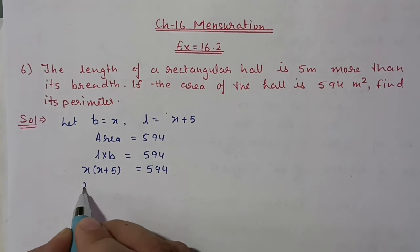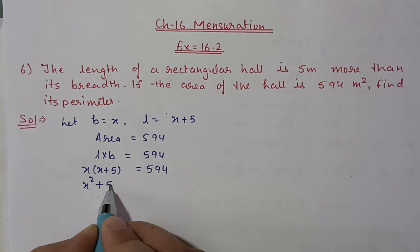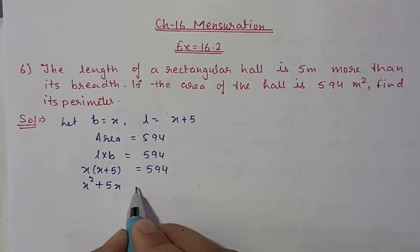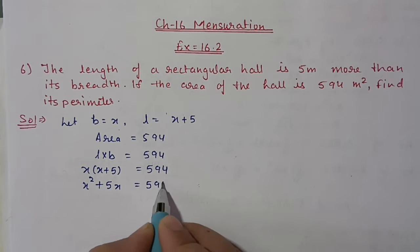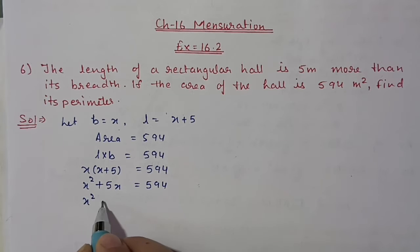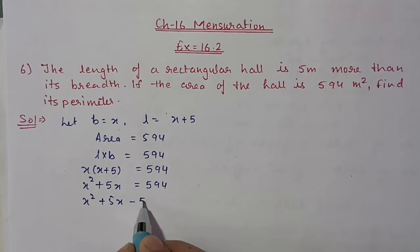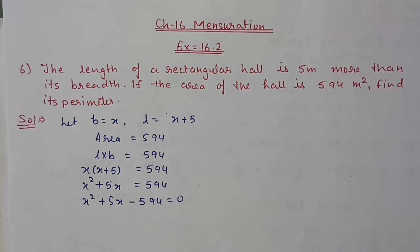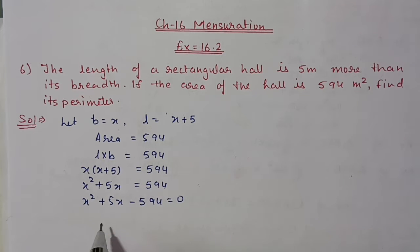We get x squared plus 5x equals 594. Shifting 594 to this side, we get x squared plus 5x minus 594 equals 0. Now we have to find factors of 594 such that after subtraction, 5 should come. So the factors will be 27 and 22.